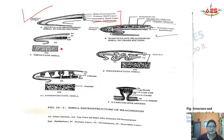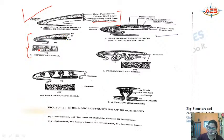In impunctate shells, there is no tubular outgrowth running normal or perpendicular to the shell surface cutting across the layers. Because the shell is devoid of any punctae, they are known as impunctate shells.